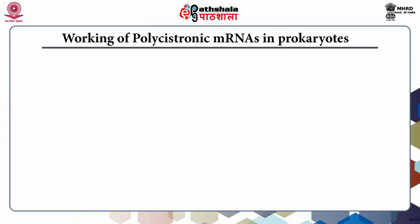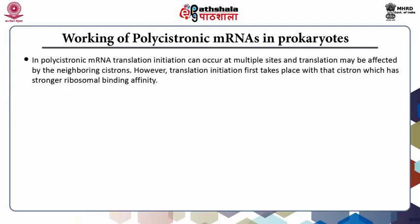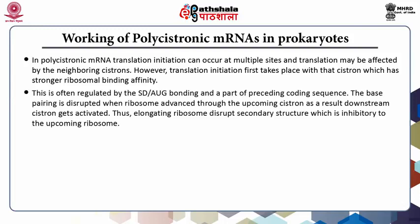Next, we discuss the working of polycistronic mRNA in prokaryotes. In polycistronic mRNA, translation initiation can occur at multiple sites and translation may be affected by neighboring cistrons. Translation initiation first takes place with the cistron that has a stronger ribosomal binding affinity. This is regulated by the Shine-Dalgarno sequence or AUG bonding, and a part of preceding coding sequences. Base pairing is disrupted when the ribosome advances through the upcoming cistron, as a result of which downstream cistrons get activated, and the elongating ribosome disrupts secondary structure that is inhibitory to the upcoming ribosome.